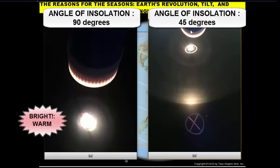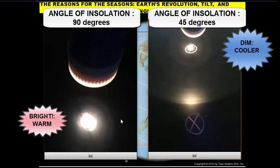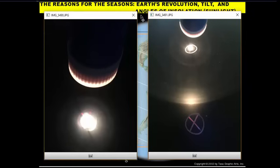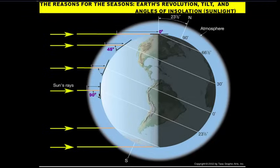If you angle the flashlight to about 45 degrees onto the target, the central beam is much smaller and less intense than at 90 degrees. The halo of the 45 degree angle light is much bigger, meaning it spreads light over a greater distance. If there's more light spread over a greater distance, there's less light striking any one particular area. The less solar radiation, the cooler the temperatures. So a pole tilted toward the Sun gives more intense insolation; tilted away gives less intense insolation and cooler temperatures.